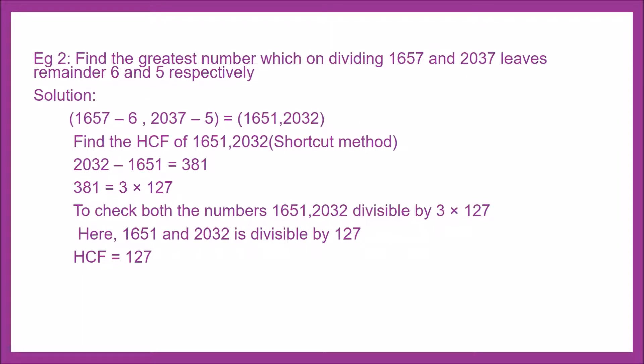Example 2: Find the greatest number which on dividing 1657 and 2037 leaves remainder 6 and 5 respectively.